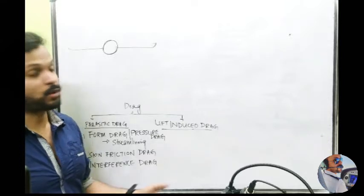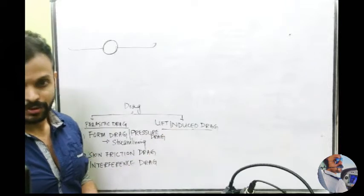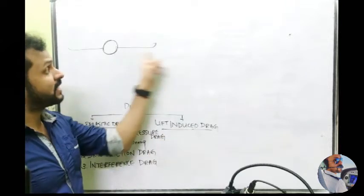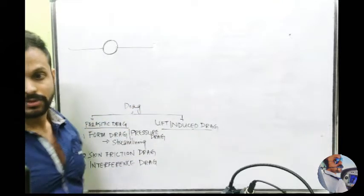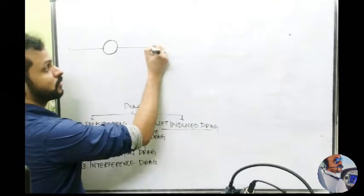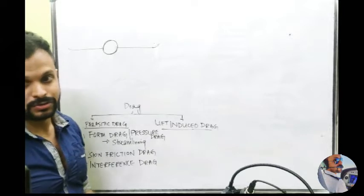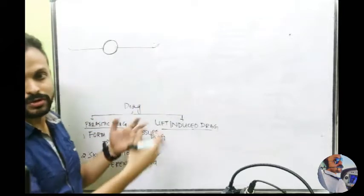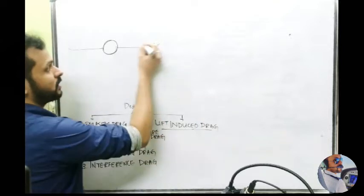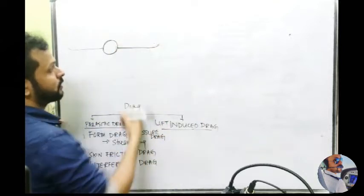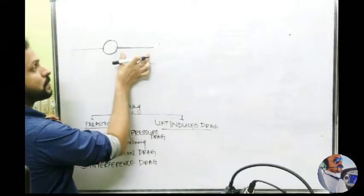They reduce drag — specifically the lift-induced drag we're talking about here. But remember, you're adding an extra structure to the wing, which is going to introduce parasitic drag. So it's a thin line between reducing one and increasing the other. We'll come back to that. This is a normal wing — no winglets yet.